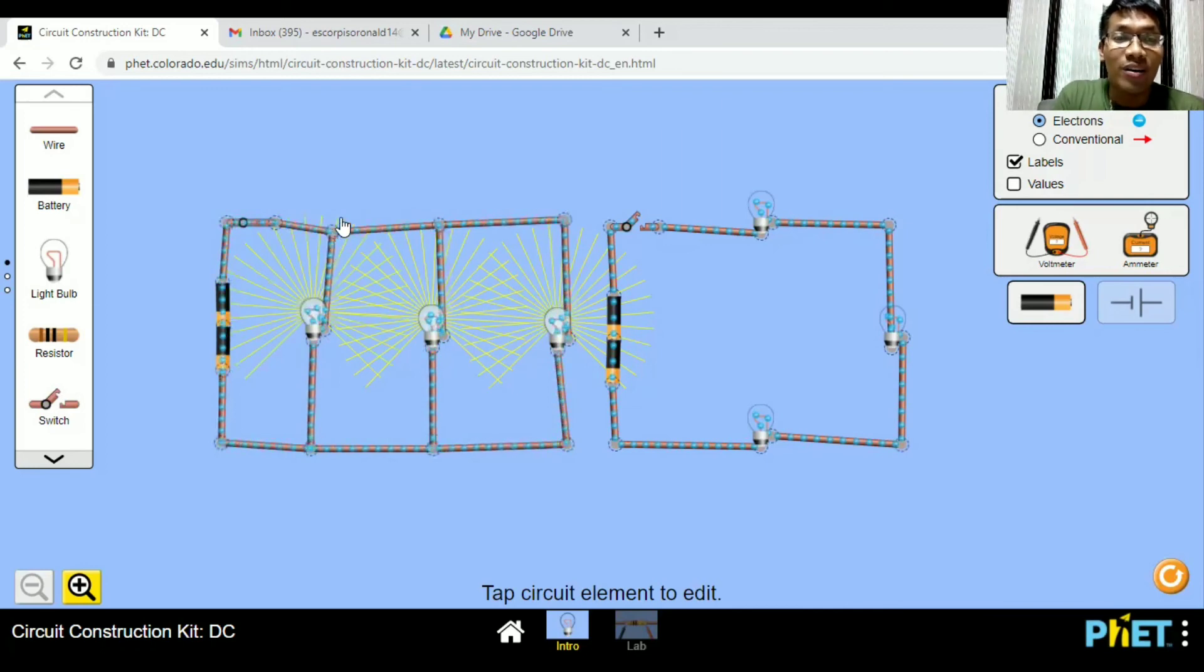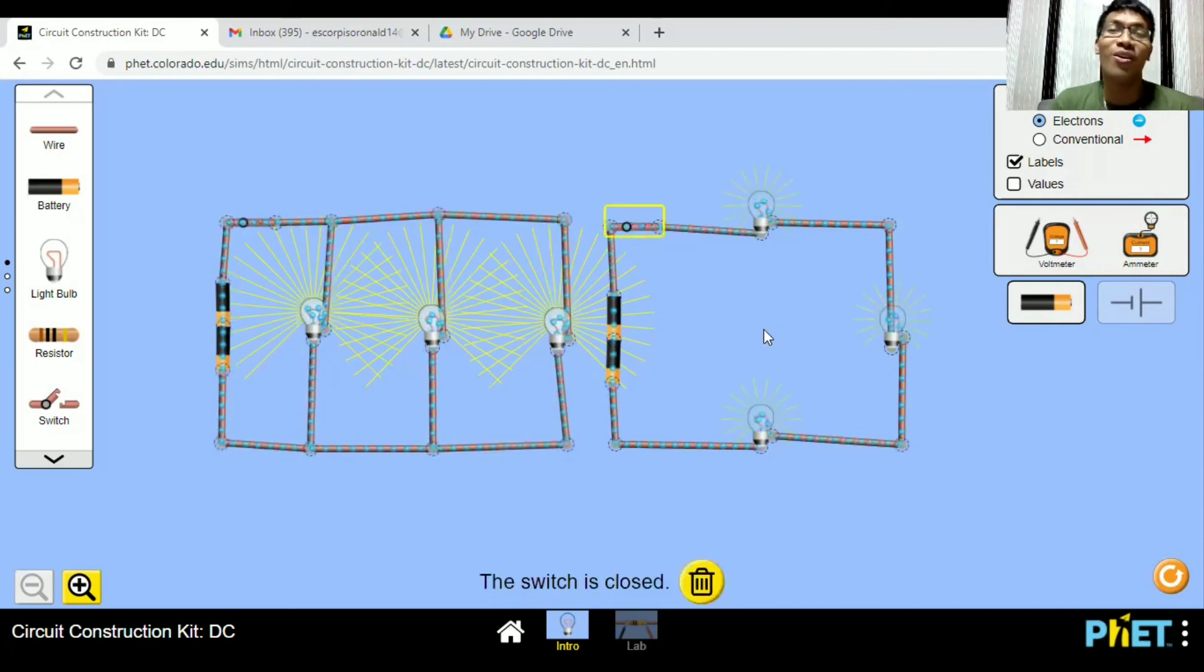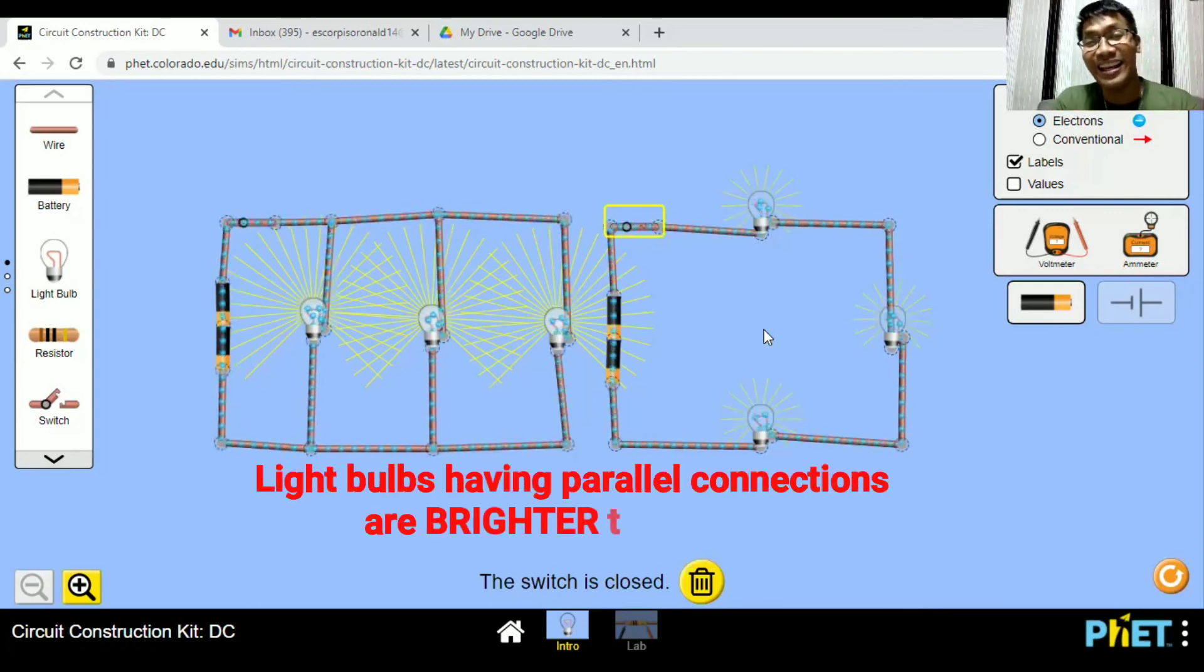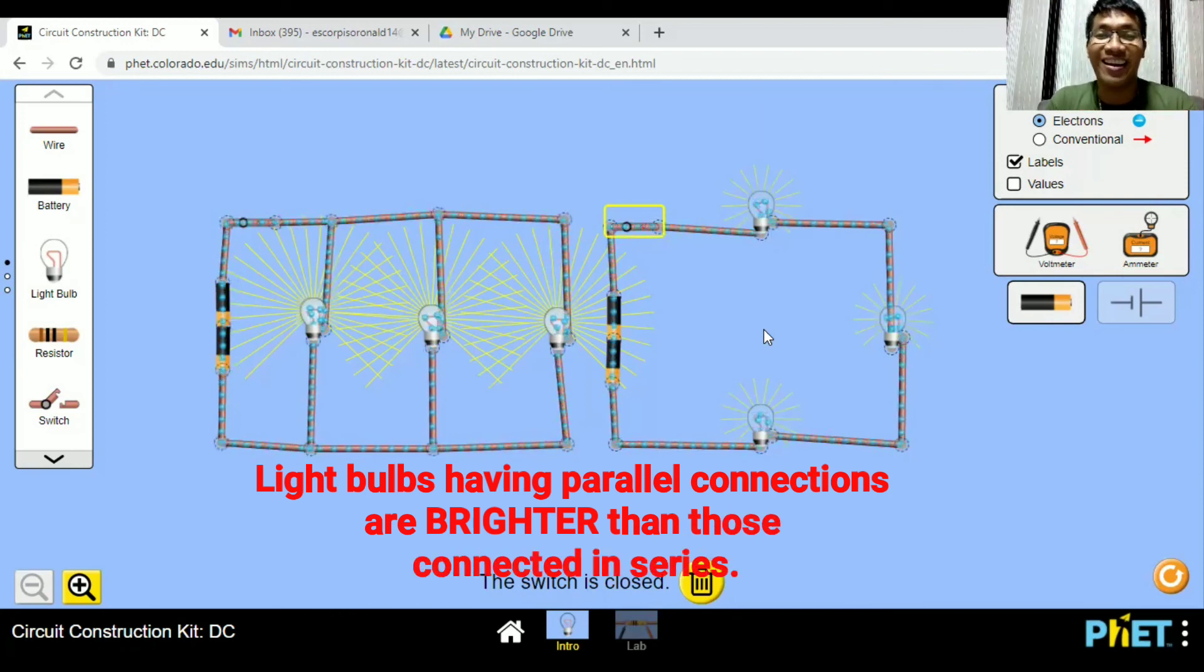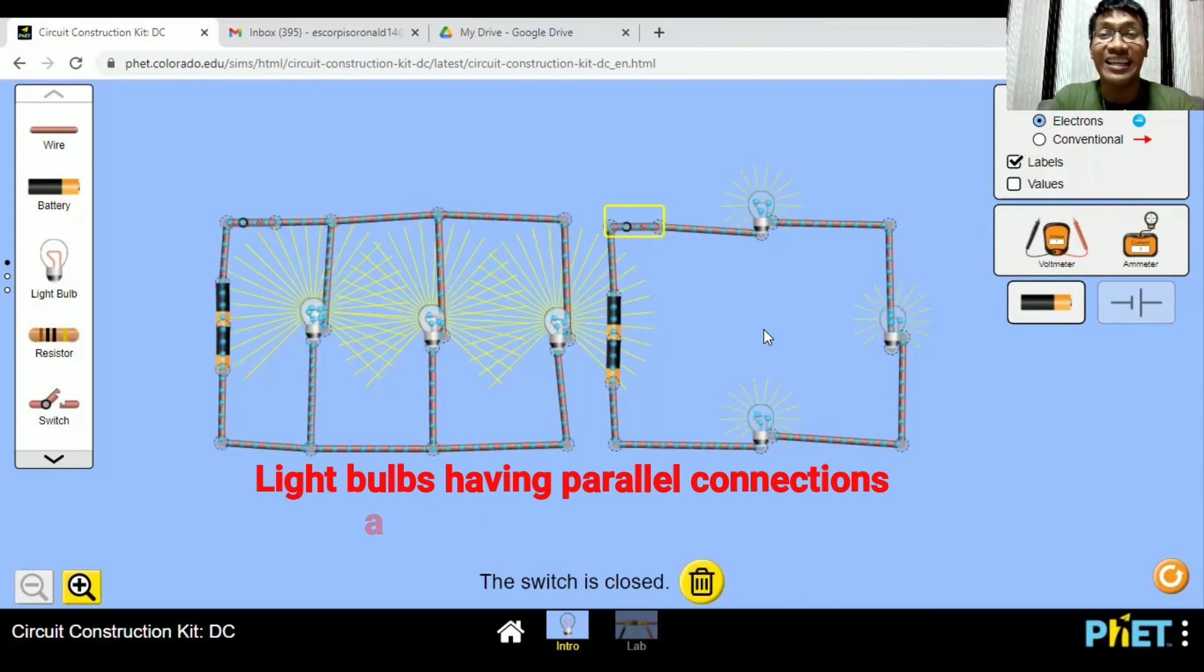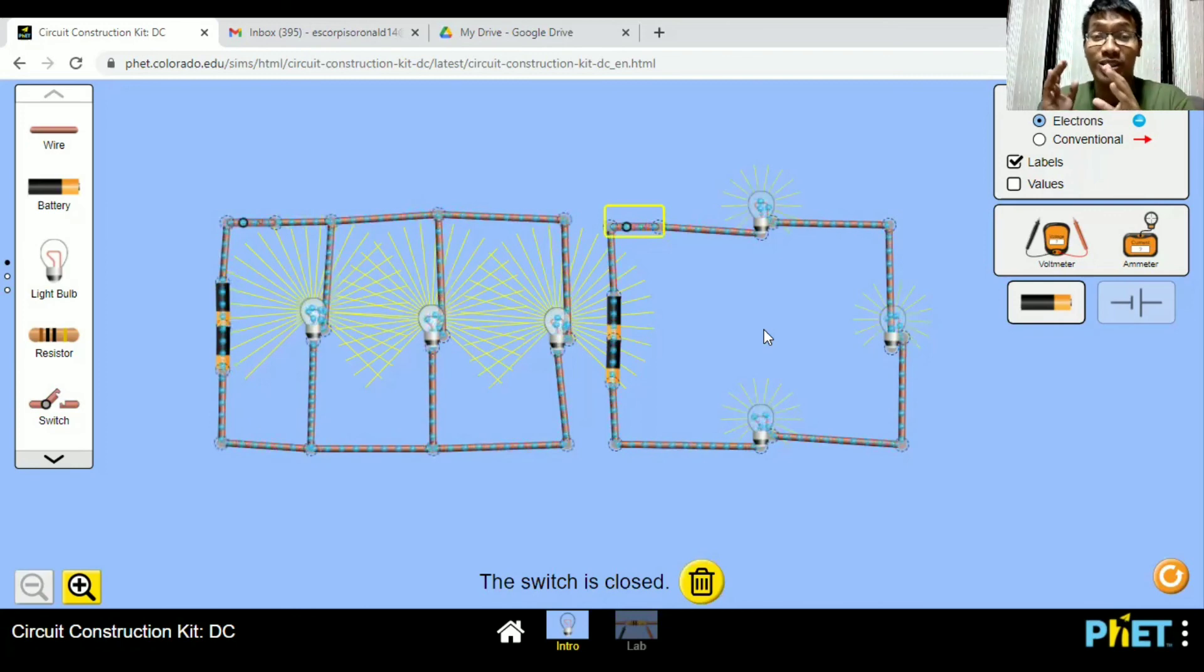This time, let us try to compare the brightness of the parallel circuit or the bulbs in parallel circuits against the bulbs connected in series. Turn on. Do you see the difference? The reason again is that the voltage receiving by each bulb is equal to the source, so with that, it glows brightly.